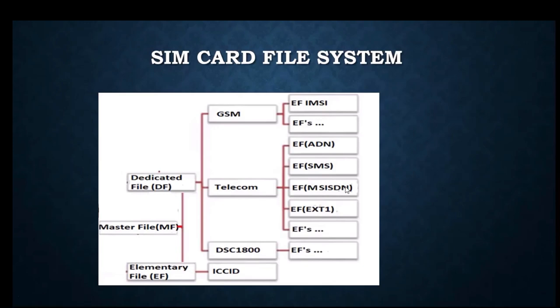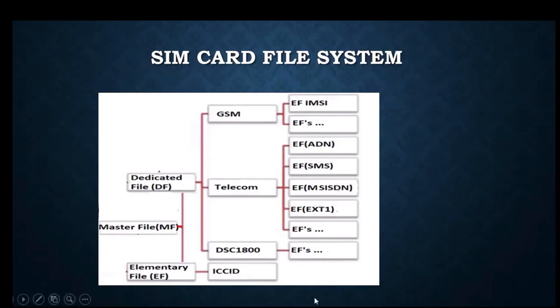MSISDN is intended to convey the telephone number assigned to the subscriber for receiving calls on a specific phone. The mobile operating system uses MSISDN to convey the subscriber's mobile number when a call is to be received. There are also certain extended files available as part of the Telecom dedicated file.